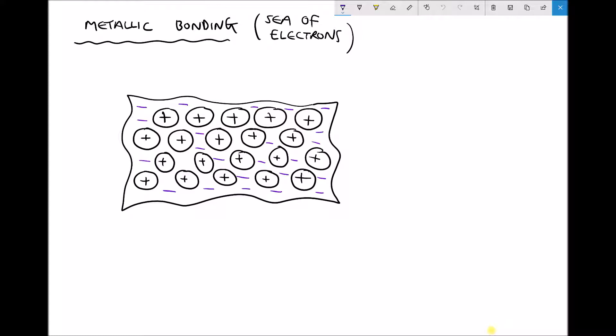Now we know that metals are keen to lose electrons. If we take sodium for example, we know that sodium has the electron configuration 2,8,1. It has one electron in its outer shell and it's keen to lose that electron.